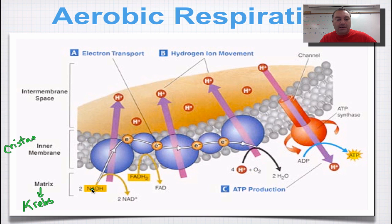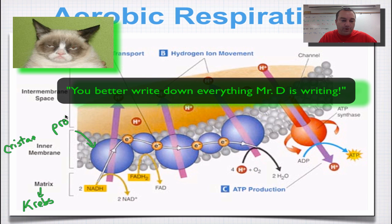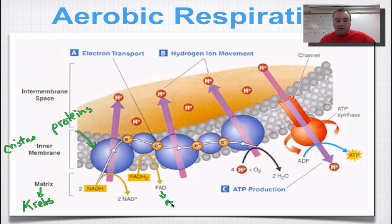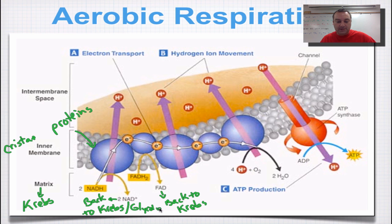These NADH and FADH2 are going to drop off electrons to the chain. You see these blue circles? These are membrane proteins — the specific proteins of the electron transport chain. FAD is going to go back to the Krebs cycle, and NAD+ is going to go back to the Krebs cycle and glycolysis.